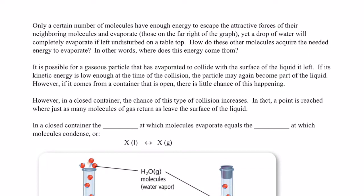Only a certain number of molecules have enough energy to escape the attractive forces of their neighboring molecules and eventually evaporate. Yet a drop of water will completely evaporate if left undisturbed on the tabletop. How do these other molecules acquire the needed energy? They acquire it from the surroundings.